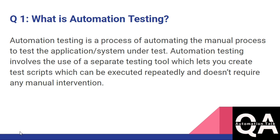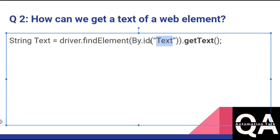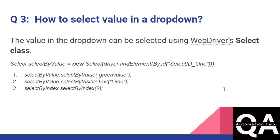The second question is: how can we get the text of a web element? We have a method called getText() in Selenium. You just have to find the element by ID or whatever locator you want to use, and then call getText(), which is going to return a string. That is the method you can use to get the text of a web element.